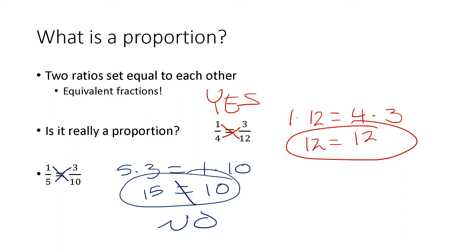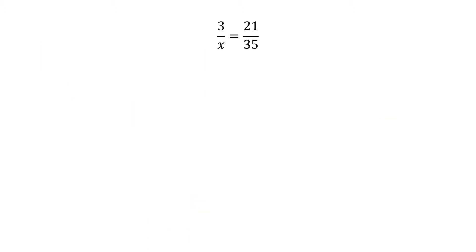This property of proportions — that you can multiply the two corners together and they come out equal — is very, very useful, and we will see this play out a lot. This is the kind of problem you're going to see a lot in your homework: two proportions set equal to each other, but one of the numbers is missing. We have a letter there instead. The technique we're going to look at to solve for a missing proportion is one that you will use forever — in math class and when you start doing dosage conversions. Make sure you're taking good notes.